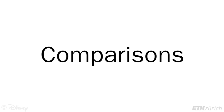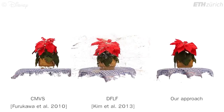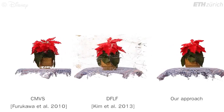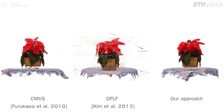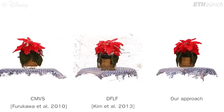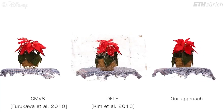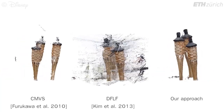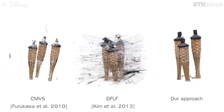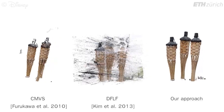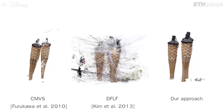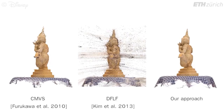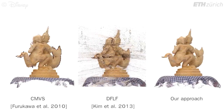Here we show comparisons to other methods. We compare to the point clouds computed using CMVS. CMVS uses a patch-based approach, which yields sparse points and misses fine structures. DFLF rather uses a per-pixel approach, which yields denser results but with a higher degree of erroneous estimates.